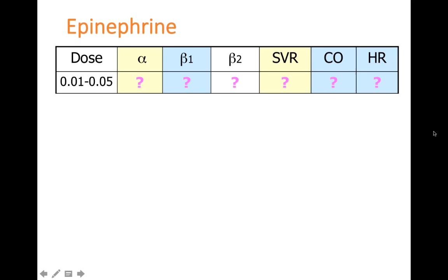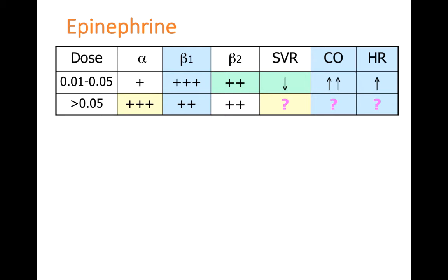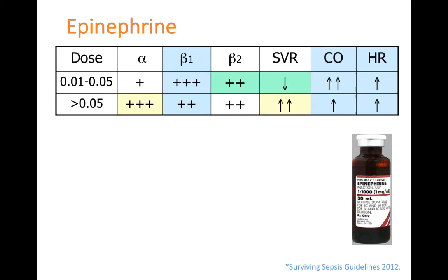Epinephrine has varying receptor effects depending on the dose. At low doses of 0.01 to 0.05 mcg/kg/min, you get more beta-1 and beta-2 effects relative to alpha. Hemodynamically, beta-1 activation increases cardiac output and heart rate the most, while beta-2 effects actually vasodilate and decrease SVR. As you increase the dose above 0.05 mcg/kg/min, alpha effects predominate — increasing SVR — while beta effects still provide some increase in cardiac output and heart rate.